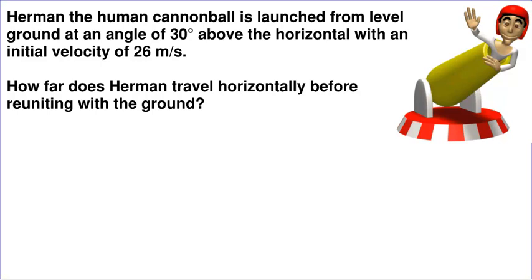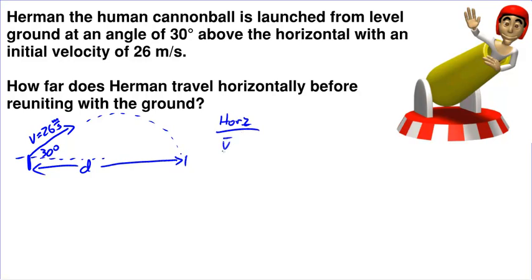Let's take a look. If Herman the human cannonball is launched from level ground at an angle of 30 degrees with an initial velocity of 26 meters per second, how far does he go before he comes back to the ground? That sounds like a horizontal question because we want to know his distance traveled. Horizontally, what do we know? Do we know his average velocity, displacement, or time? I don't think we know any of those at the moment.